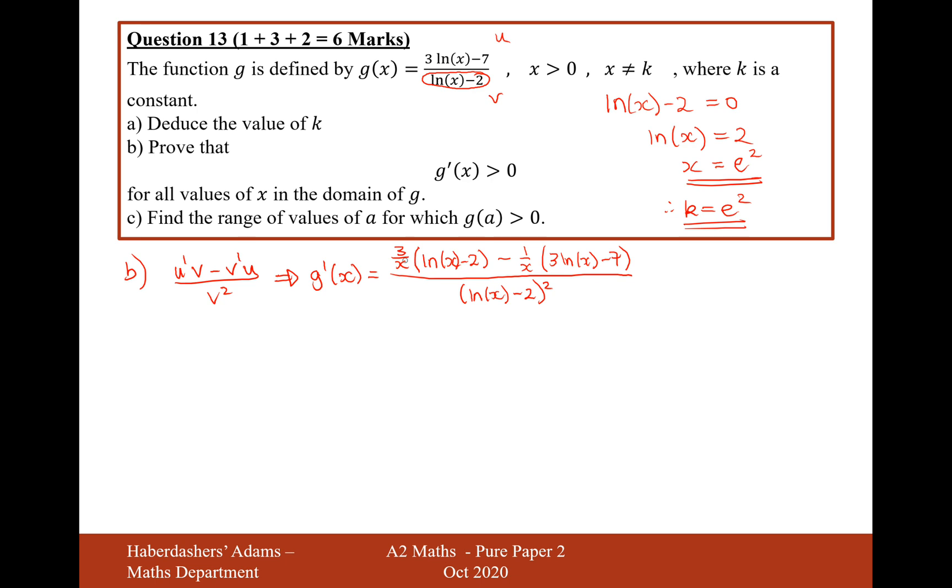Now with these x's on the numerators here, I can actually move them to the denominator. So it's going to be 3 ln(x) minus 2 minus 3 ln(x) minus 7, all over x bracket ln(x) minus 2 squared. So effectively, I've moved those x's on the denominator to the bottom now on x here. You could think of it as times in top and bottom by x.